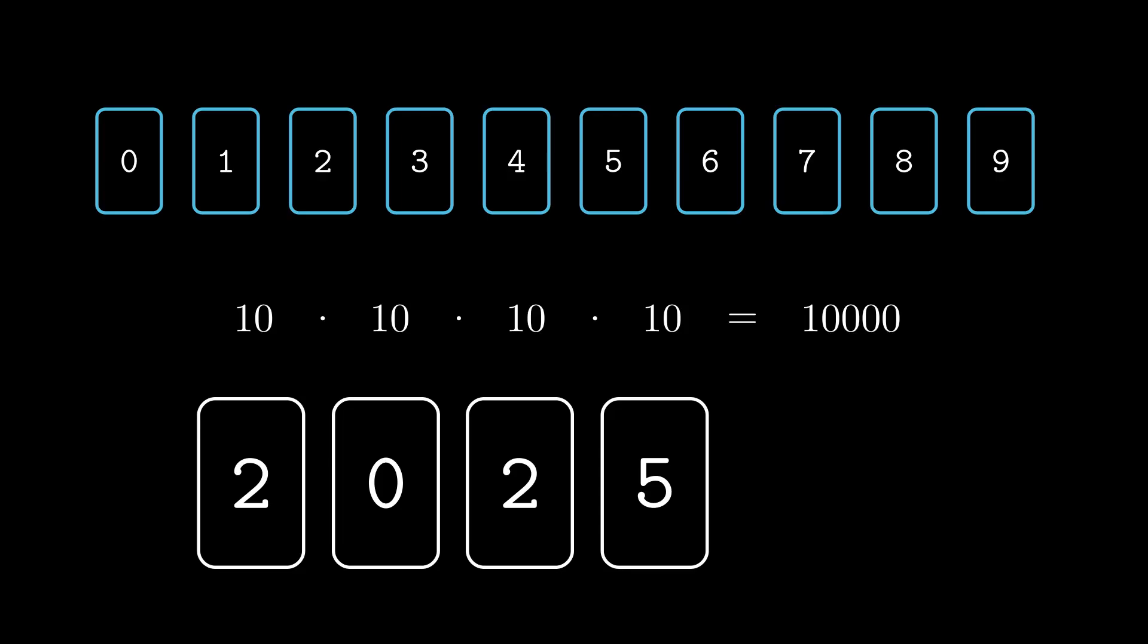If you entered one combination per second into the safe, it would still take nearly three hours to try all possible combinations, unless you're lucky.